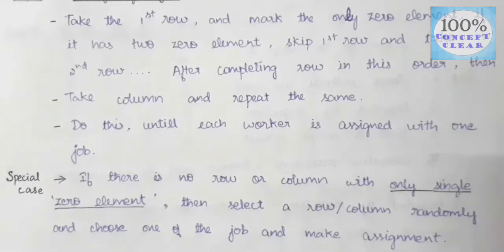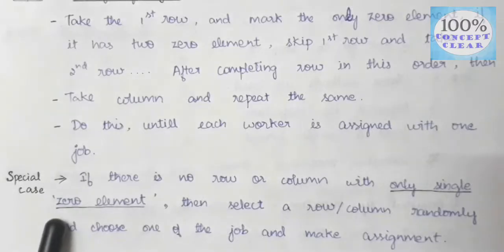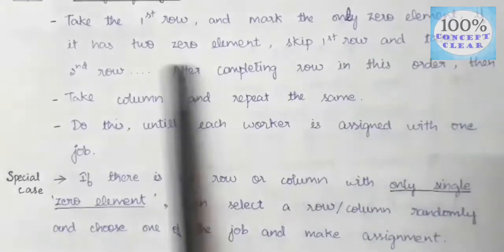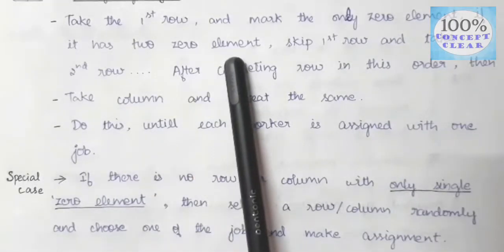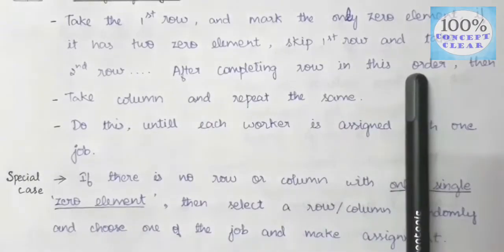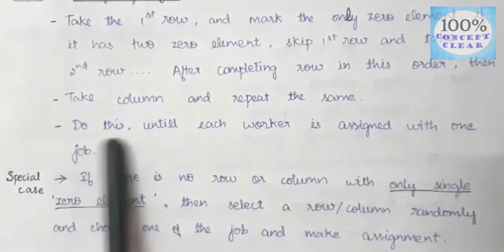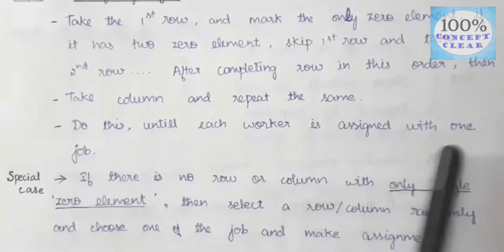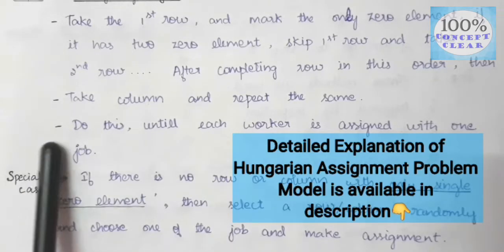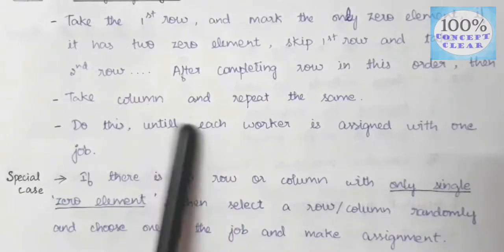In this video, we are going to assign jobs in this special case model. Take the first row and mark the only zero element. If it has two zeros, skip the first row and take the second row. After completing all rows in this order, then take the columns and repeat the same.